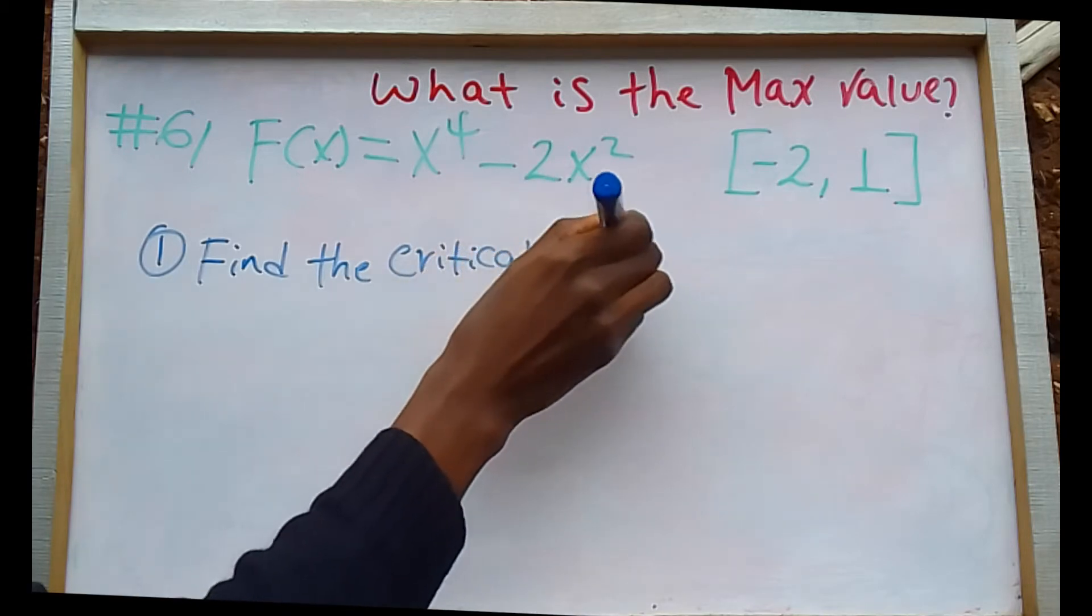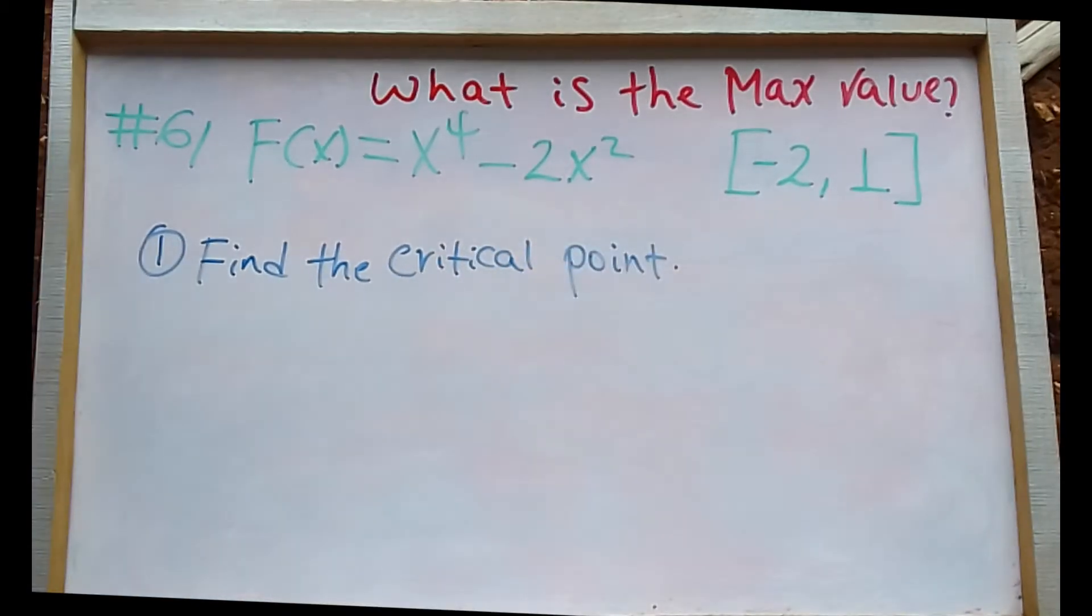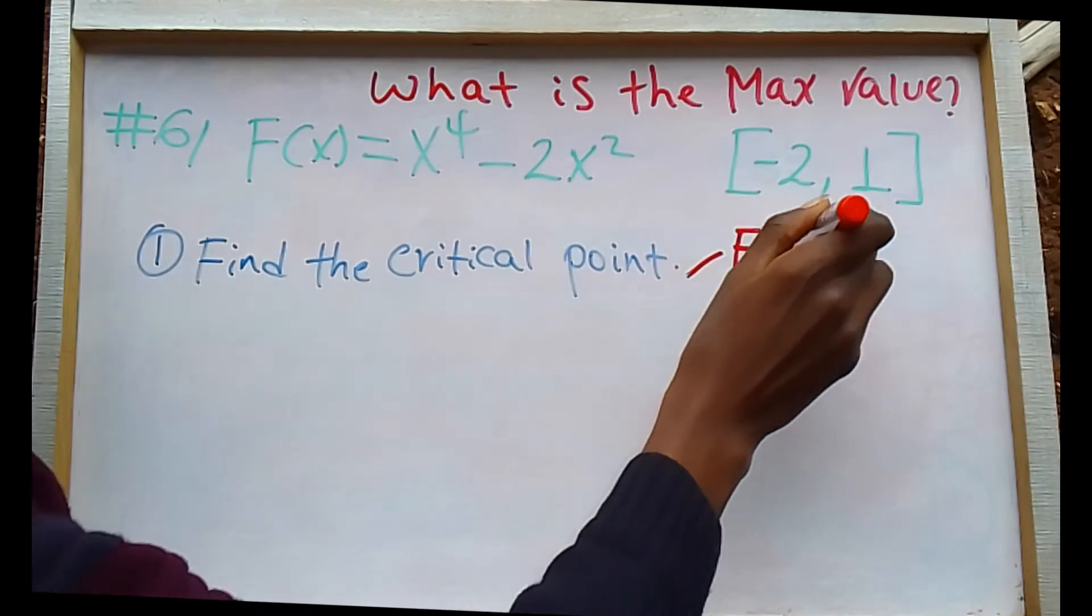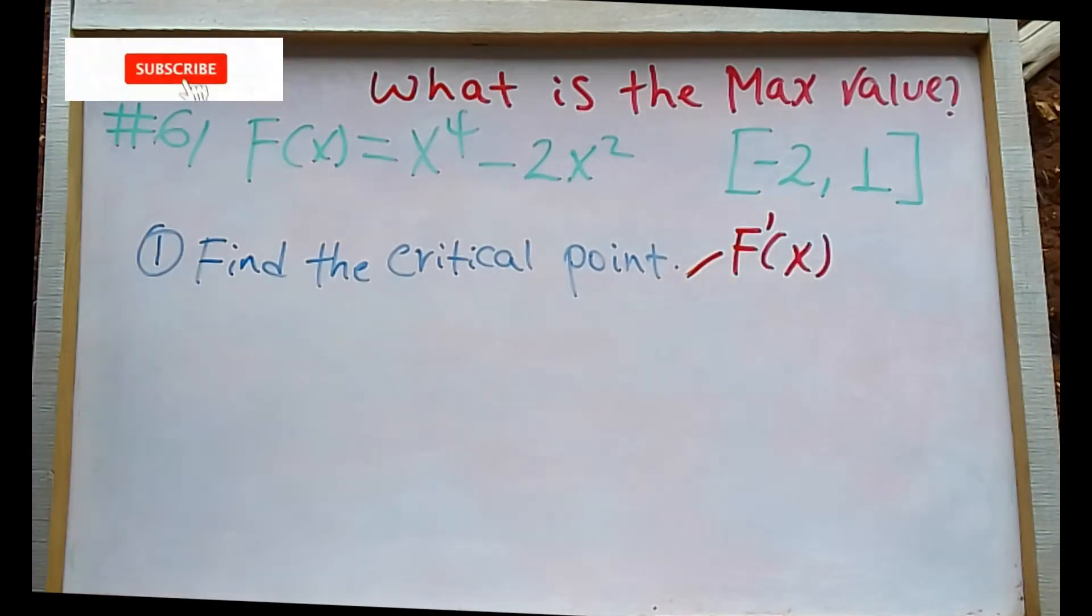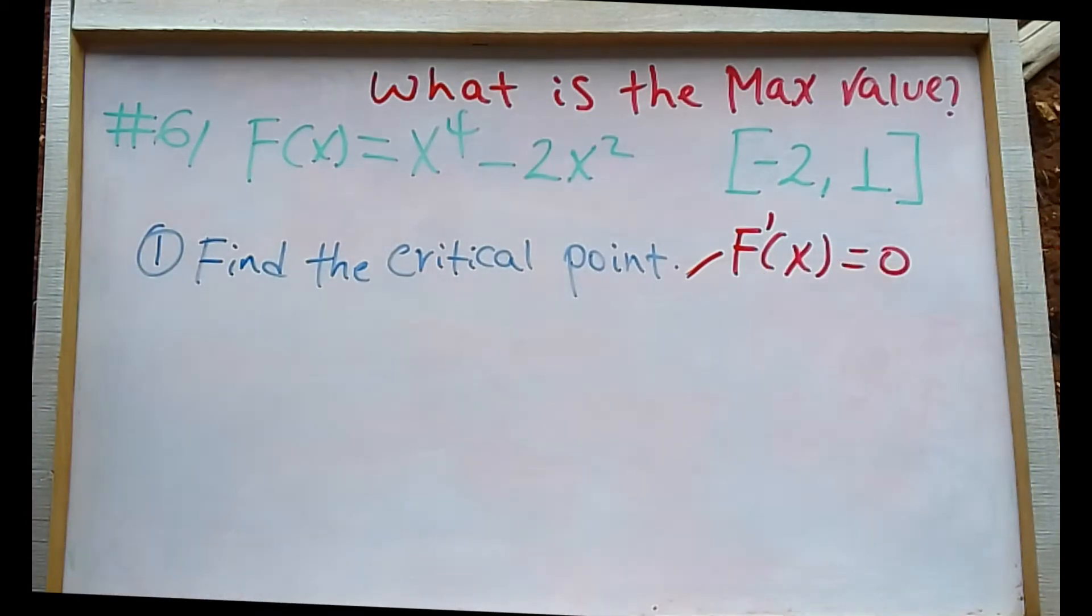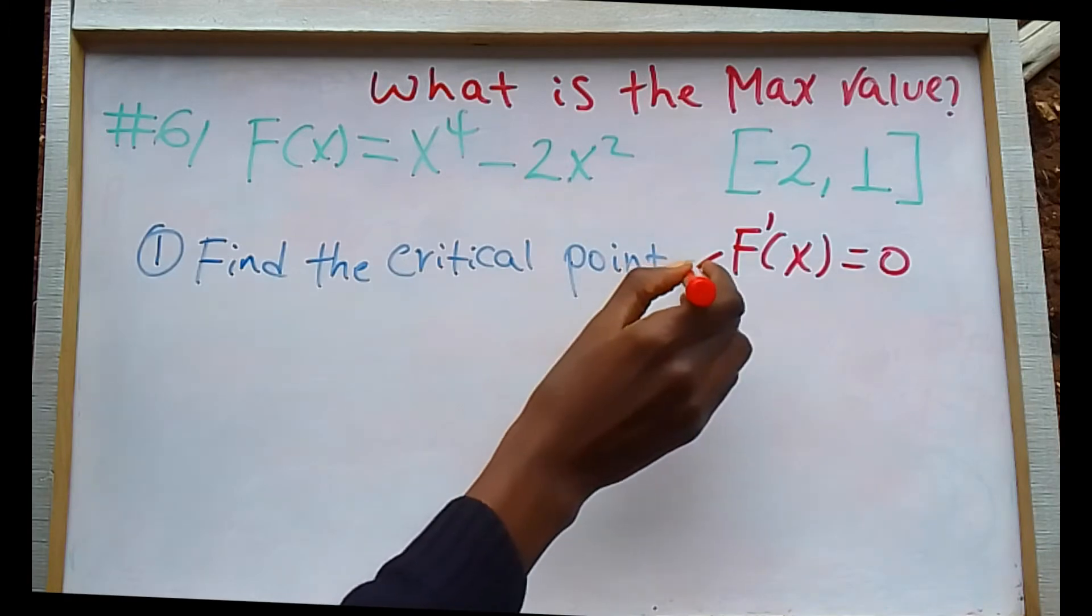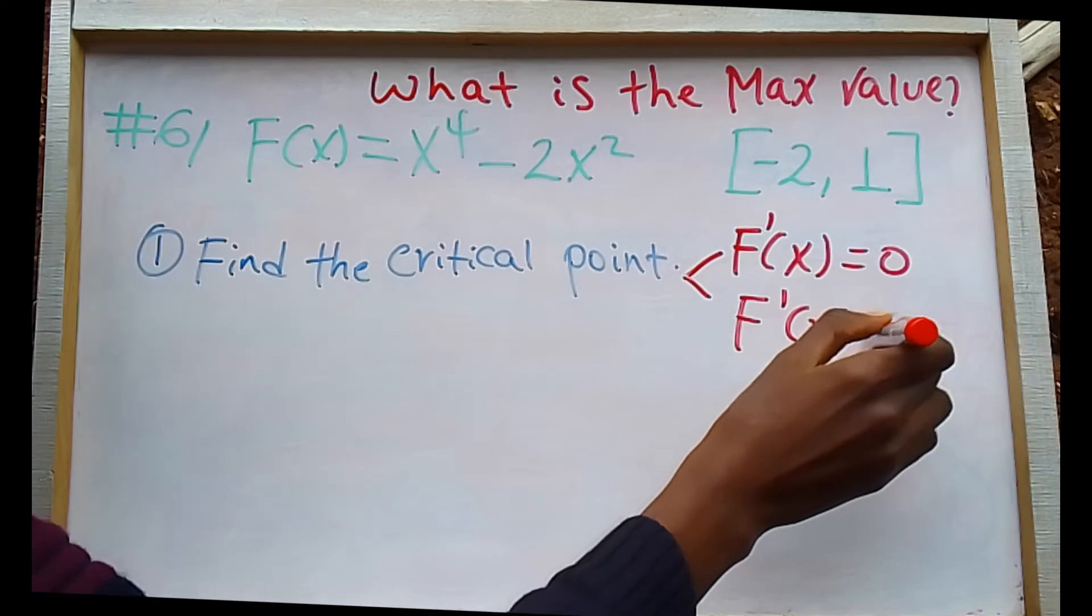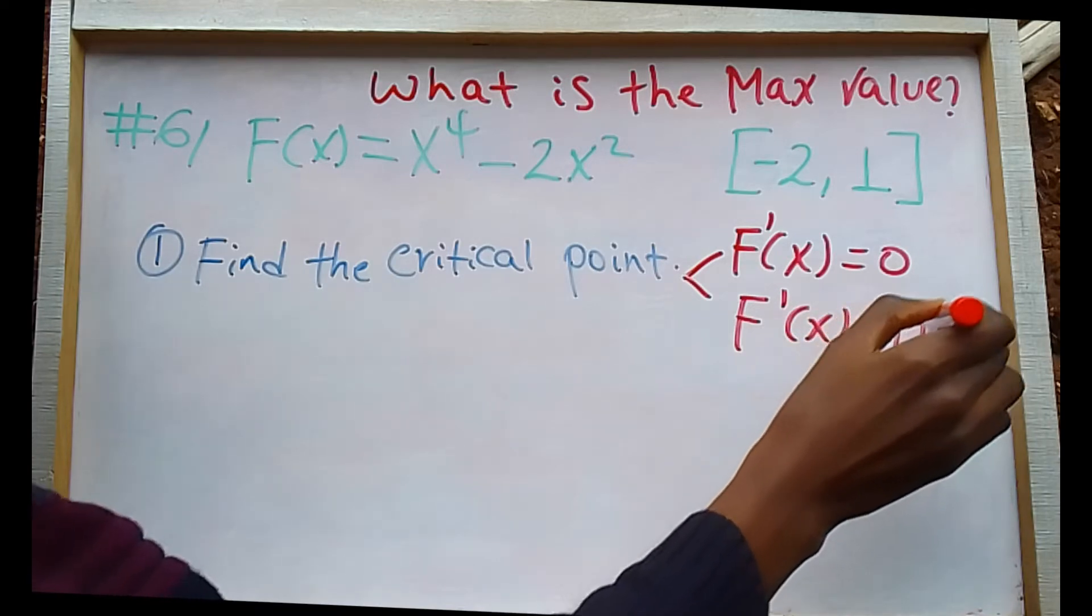Step one: Find the critical points. The critical point is where the derivative equals zero.